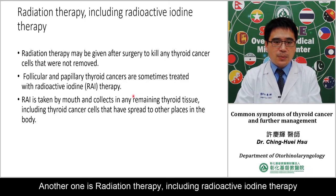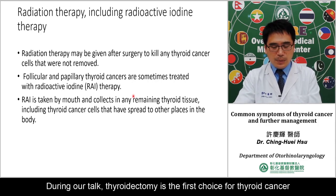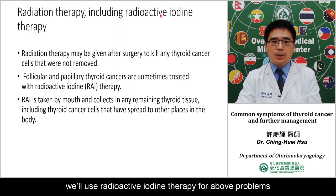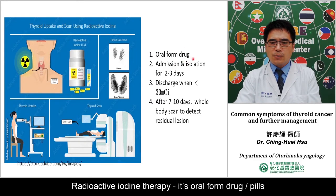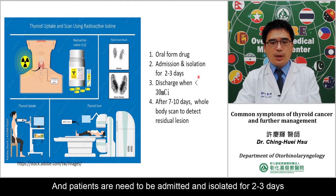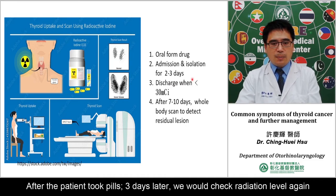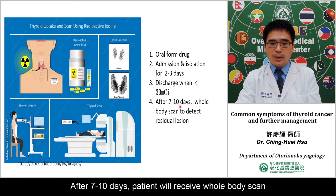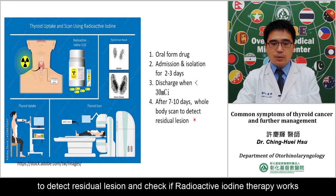Another treatment is radioactive iodine therapy. Thyroidectomy is the best first choice for thyroid cancer, but for unresectable or residual disease, radioactive iodine therapy is used. The radioactive iodine is taken orally, and the patient needs admission and isolation for two to three days. After taking the medication, radiation levels are checked, and if below 30 mCi the patient is discharged. After seven to ten days, a whole body scan is performed to detect residual disease and assess whether the radioactive iodine treatment was effective.